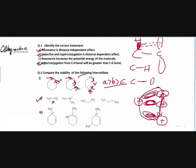Looking at hyperconjugation: there are 3 alpha hydrogens that can participate in hyperconjugation in intermediate A, there are 6 alpha hydrogens in option B, and there are 2 alpha hydrogens in the third intermediate, and again 2 that can participate in hyperconjugation in the fourth intermediate. More CH bonds participating in hyperconjugation means more electronic cloud density released into the empty orbital, fulfilling the deficiency to a greater extent and providing more stability.